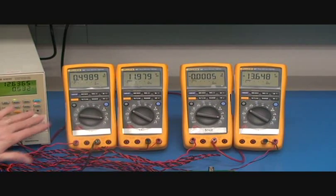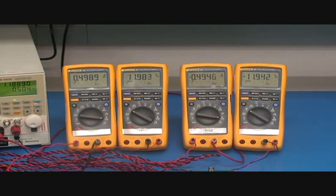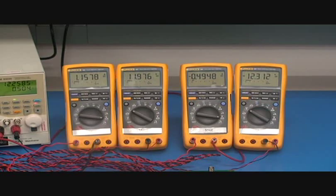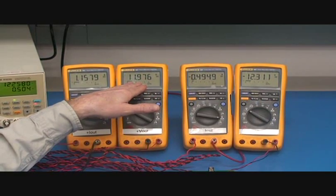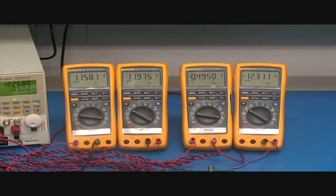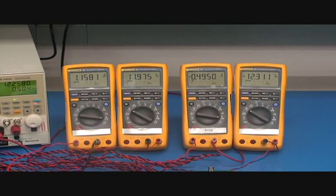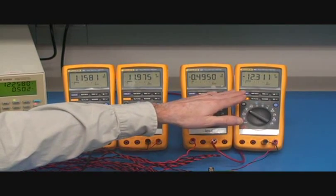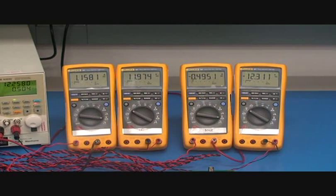Next we will take the positive load to 70%. And the positive stays regulated at 11.97. And now the negative voltage at 30% load goes to negative 13.6 volts.